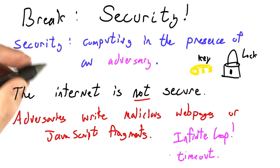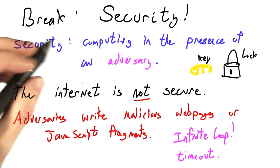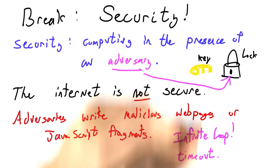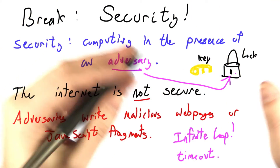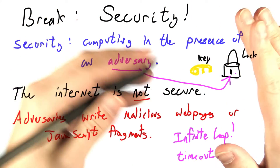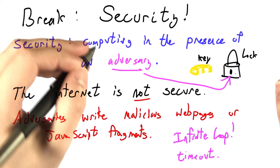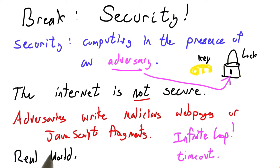If we make any mistakes when we're designing our web browser, then outside agents might break in to our computers and gain access to sensitive documents — our tax returns, our personal email, or whatnot. We want to make sure that that doesn't happen. Let's listen to someone who knows quite a bit more about security than I do, talk about how this plays out in the real world with web browsers.